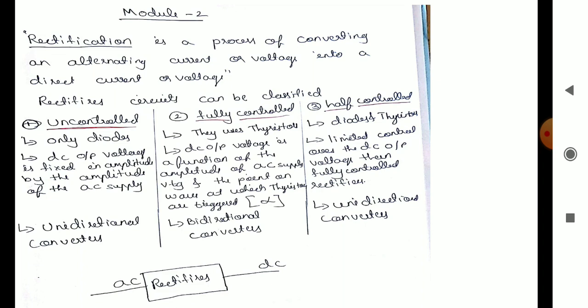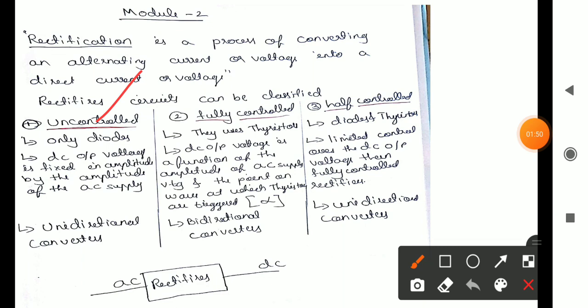Based on the equipment used in the rectification process, rectifiers are classified as: uncontrolled rectifier, fully controlled rectifier, and half controlled rectifier. If only a diode is used, it is called an uncontrolled rectifier. If a diode and thyristor are used together, it is called a half controlled rectifier.